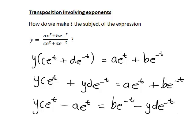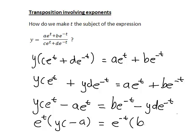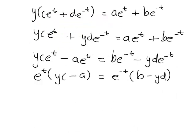We want to eventually reduce this down to a single t equals expression, so the fewer terms with t the better. Since both terms on the left are multiplied by e^t, we take that out as a common factor, giving e^t times (yc minus a). Doing the same on the right, taking e^(-t) out as a common factor, we get e^(-t) times (b minus yd). We've reduced the number of terms involving t from 4 down to 2.